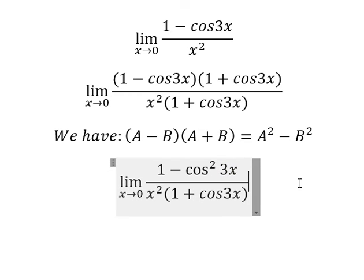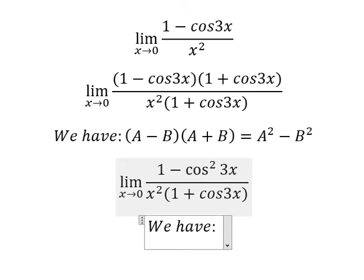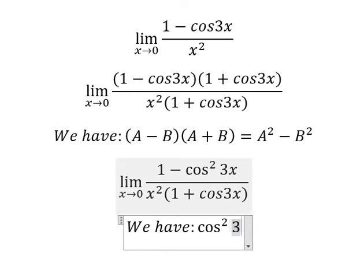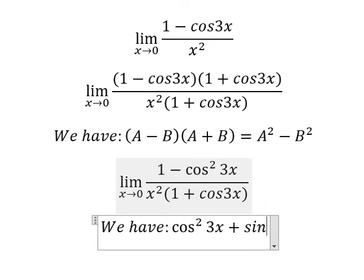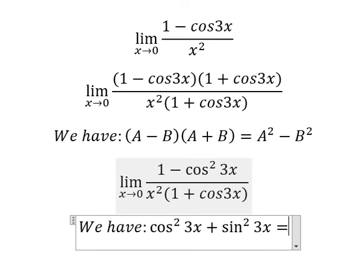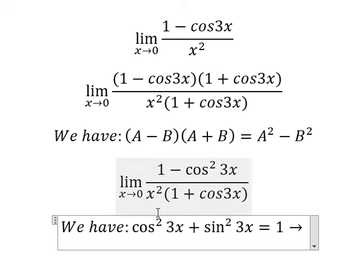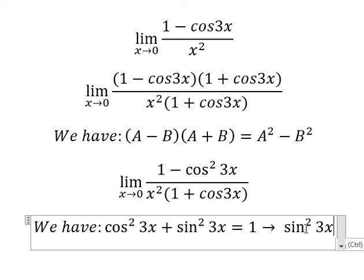Next we have the second formula: cos²3x + sin²3x = 1. So we need to rearrange this to the right, and we have 1 - cos²3x equals sin²3x.